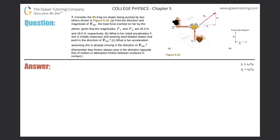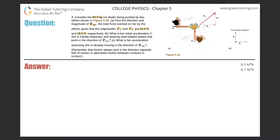Number seven: consider the 65 kilogram ice skater being pushed by two others shown in figure 5.19. Letter A: find the direction and magnitude of the total force exerted on her by the others, given that F1 and F2 are 26.4 newtons and 18.6 newtons respectively. Here we have our picture — here's a skater in the middle with force F1 and force F2 being applied.